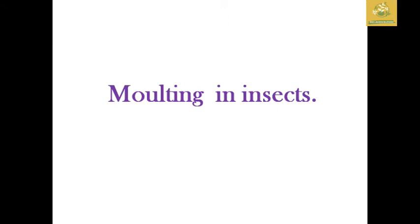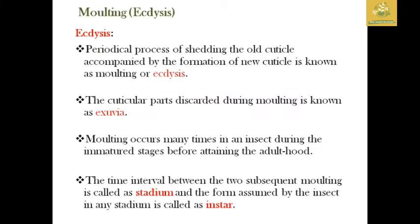In this video we are going to see the fundamentals of entomology. I am going to teach you about moulting in insects. Moulting is a natural process in insects where the body development moves to another stage. Moulting is known as ecdysis, which is a periodical process of shedding the old cuticle accompanied by the formation of a new cuticle.